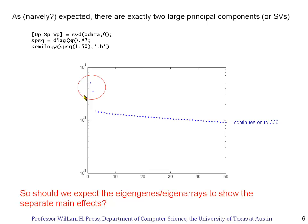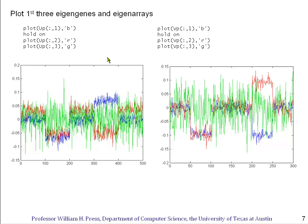The question is, how should we expect this to show up in the eigengenes and eigenarrays? Will it turn out nicely that this dot corresponds to one of the main effects and this dot corresponds to the other main effect? No, it can't be that because the eigengenes and eigenarrays are mathematically orthogonal.